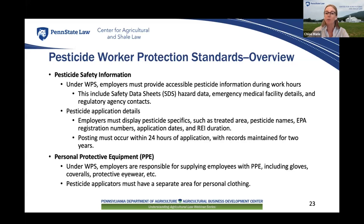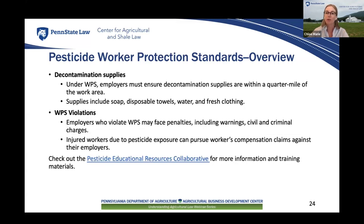Employers must provide employees with personal protective equipment, including chemical-resistant aprons, footwear, headgear and suits, coveralls, gloves, and protective eyewear. Pesticide applicators must have a designated area, separate from pesticide storage and use, where they can store personal belongings not worn during pesticide handling. They must put on their protective equipment at the beginning of any period with potential pesticide exposure, and remove it at the end. Employers must also ensure that decontamination supplies are available within a quarter mile of the work area, including soap, disposable towels, at least three gallons of water per worker for regular or emergency washing, and a fresh set of clothes.